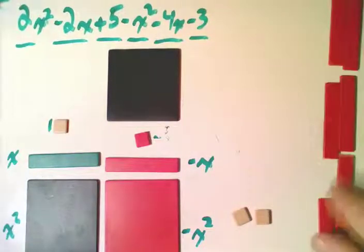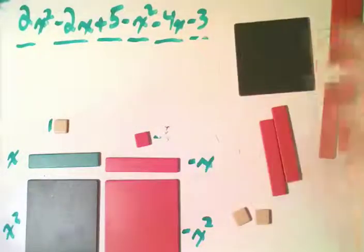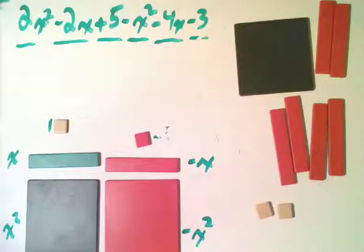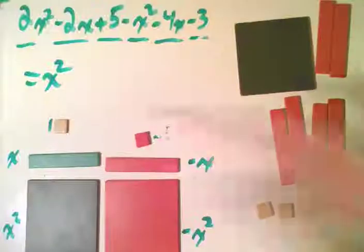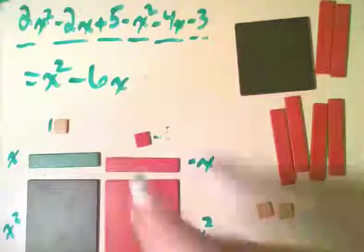And so, what are we left with? And we've got all our tiles here that we're left with. And we can say that this, we've got an x squared. We've got a negative 6x. And we have a positive 2.